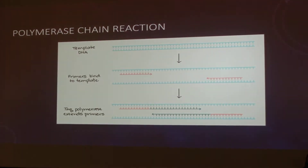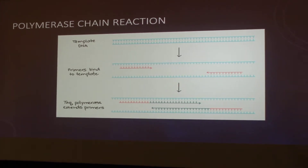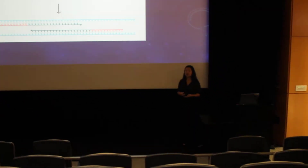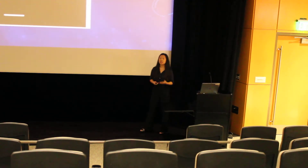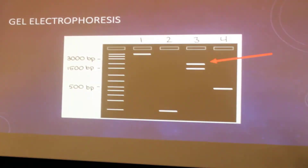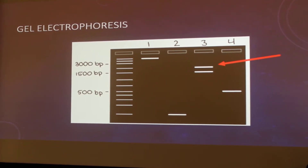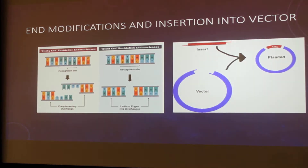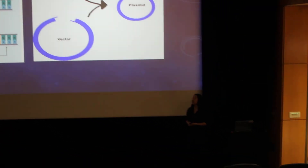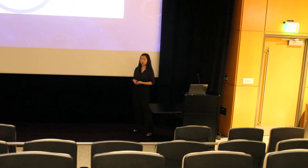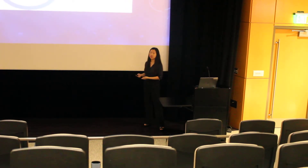Before the luciferase assay can be performed, several procedures are needed. First, after identifying which region of ACSL1 to use, it is put through PCR, or polymerase chain reaction, which amplifies the region so there is more to work with. The PCR product is then run through gel electrophoresis to confirm the correct region was obtained — gels separate DNA into bands based on size, so a 2.5 kilobase fragment would appear in the expected region. After confirmation, restriction enzymes are used to modify the ends of the promoter, and it is inserted into a luciferase reporter vector, which allows insertion of both the ACSL1 promoter and luciferase reporter gene into cells.